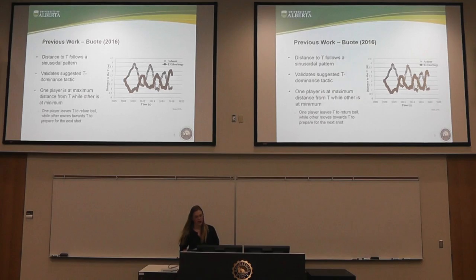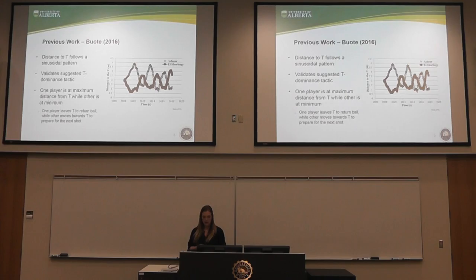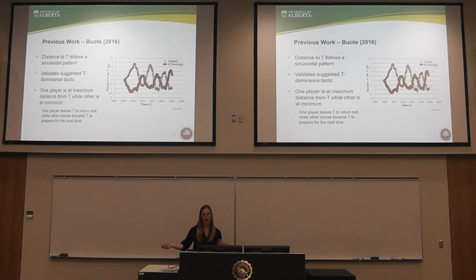This graph shows distance to the T as a function of time. The distance follows a sinusoidal pattern, which validates the T dominance tactic. It shows that one player is at a maximum distance from the T while the other is at a minimum — one player leaves the preferred T position to return the ball, while the other moves towards the T to anticipate returning the next shot.